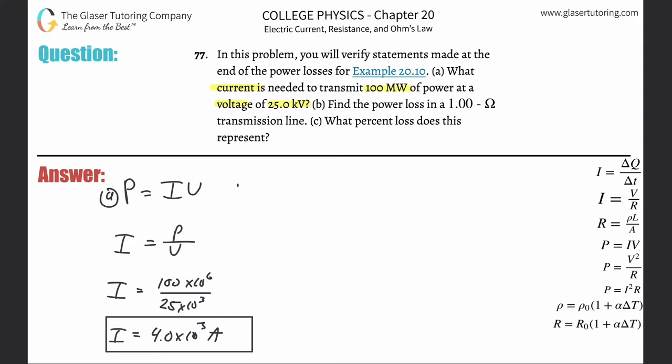So letter B. Find the power loss in a one ohm transmission line. So now basically what we have to do is we're going to use the formula power is equal to I squared times R. Because whatever current is flowing through that wire, whatever resistance that is experiencing will equal the power that is being lost to that resistance.